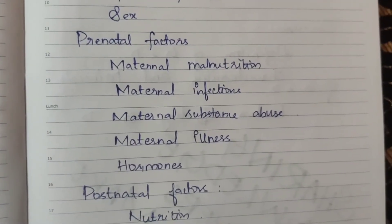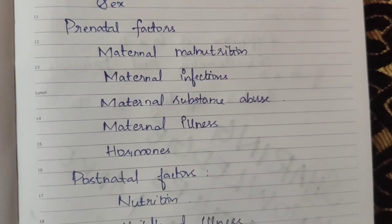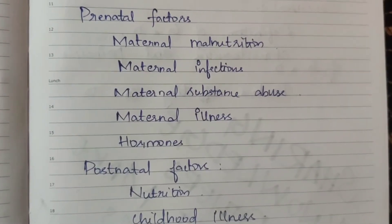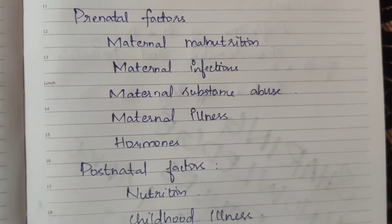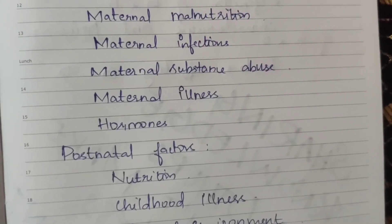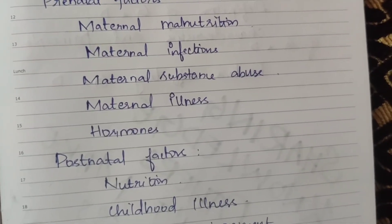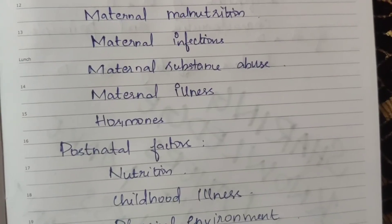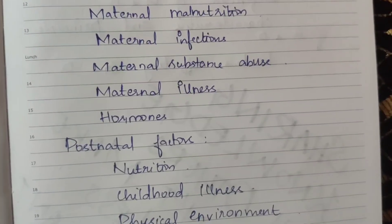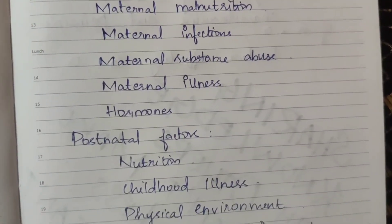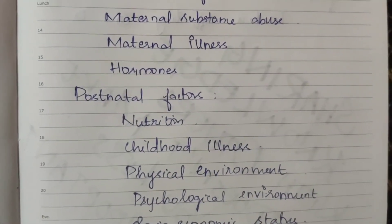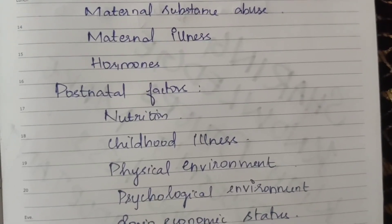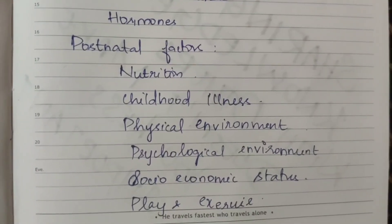Prenatal factors include: Prenatal malnutrition — if the mother is pregnant and malnourished, this will affect the child. Maternal infection — infections during pregnancy affect the baby. Maternal substance abuse — mother's cigarette smoking habit and drinking habit affect child health. Maternal illness — if the mother's body is already weak, conditions like HIV or STD problems affect the baby. Hormones and postnatal factors also play a role.